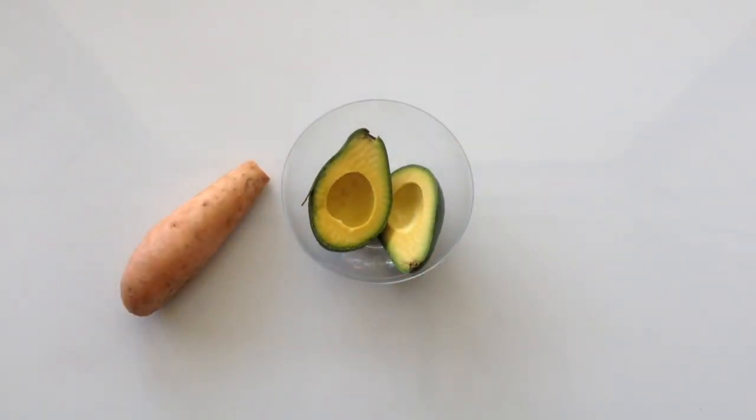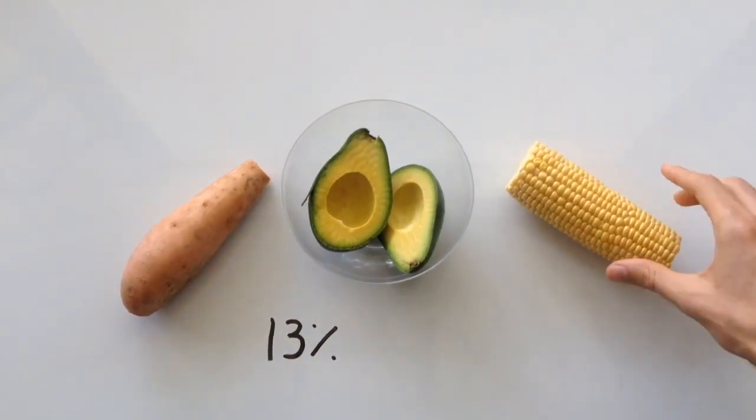A medium sized avocado and a small sweet potato is not too far behind with about 13%, while a medium sized corn has about 7%.